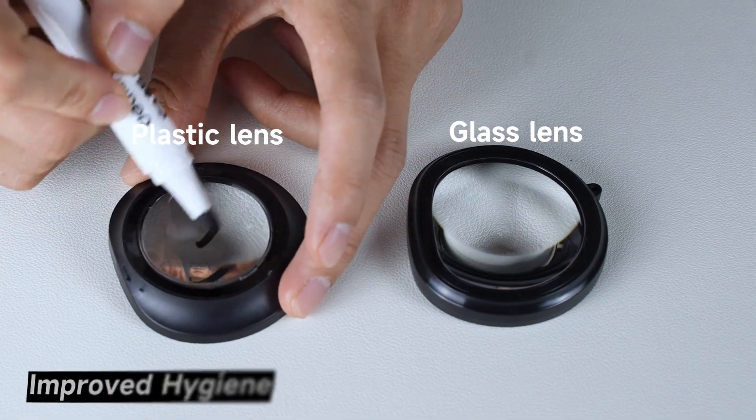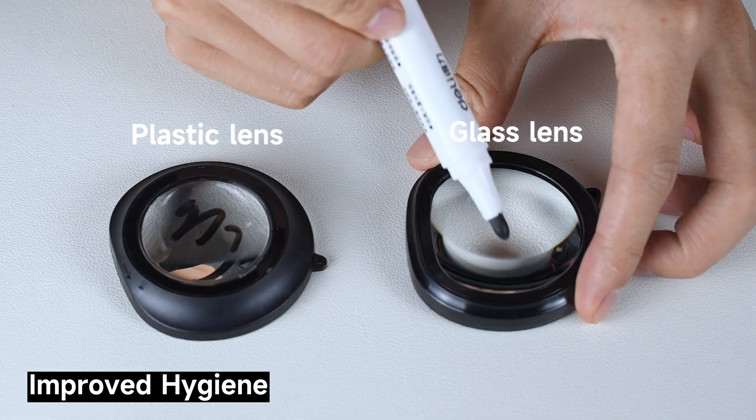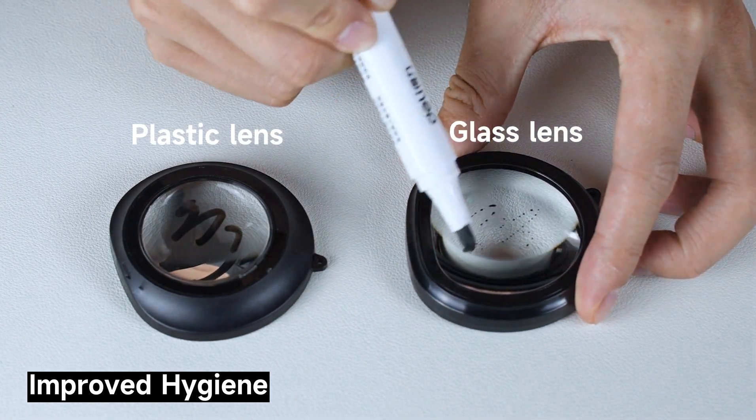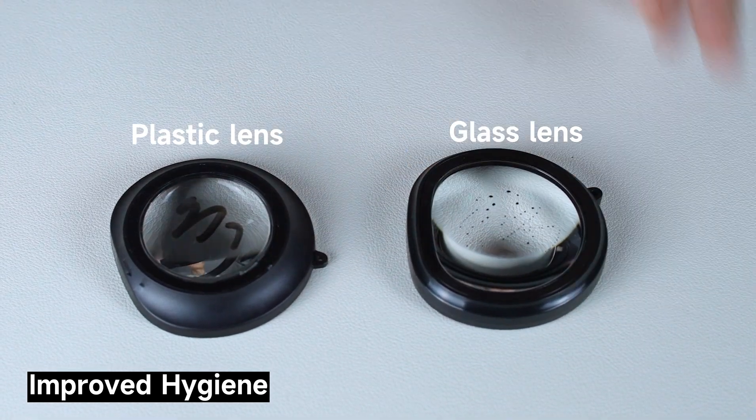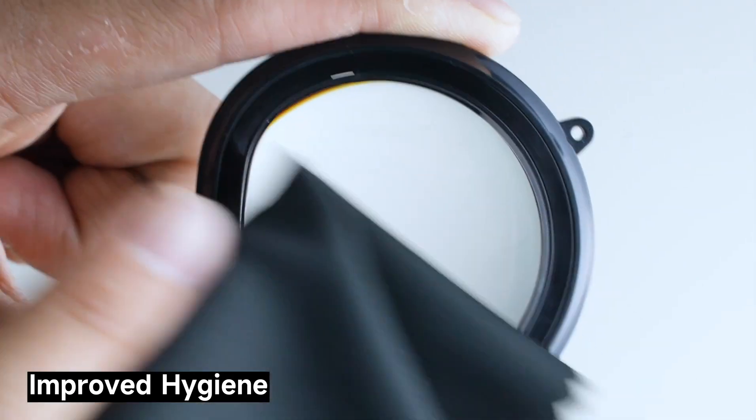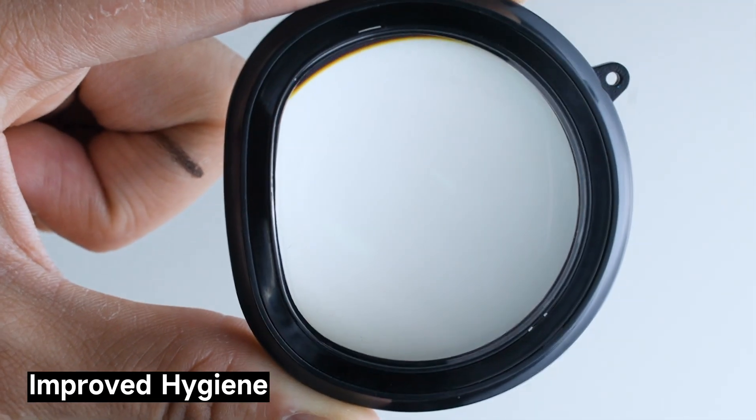Finally, glass lenses are easier to clean and maintain compared to plastic lenses. They are less likely to develop smudges or oil residues, and they can be effectively cleaned with warm water and a microfiber cloth without the risk of surface damage.